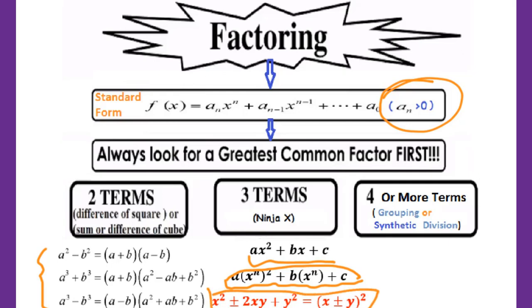If there are four or more than four terms in your polynomial, you can use the grouping or synthetic division to factor the polynomial.